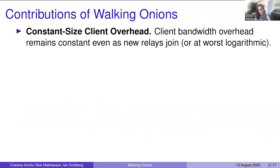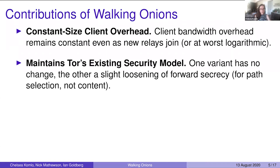So what contributions do we make with Walking Onions? In current TOR, because all clients maintain this consensus, as new relays join the network, this consensus grows and therefore client bandwidth requirements also grow. In Walking Onions, we reduce client bandwidth overhead to constant size, even as new relays join the network. And even though we reduce client overhead, we still maintain TOR's existing security model.